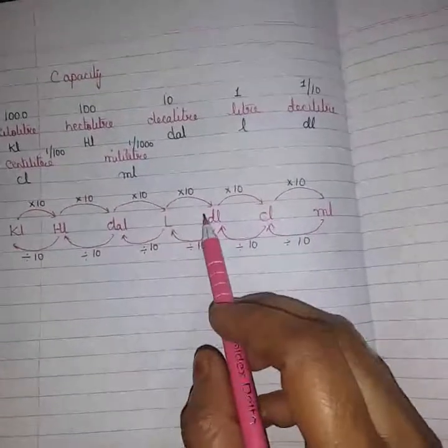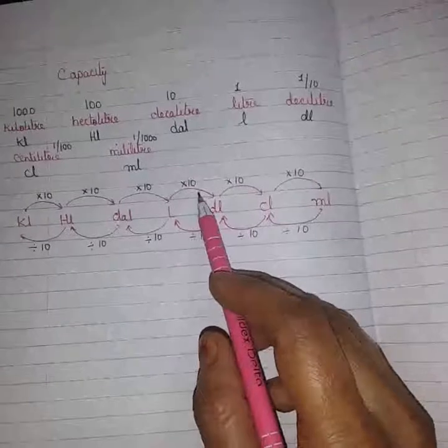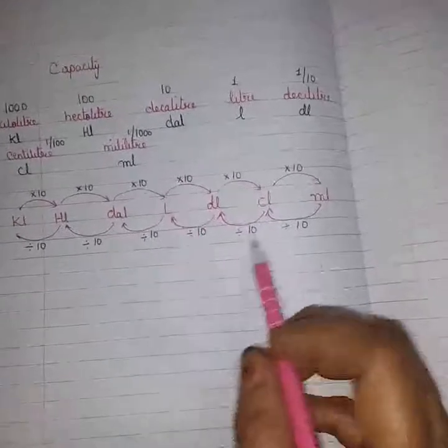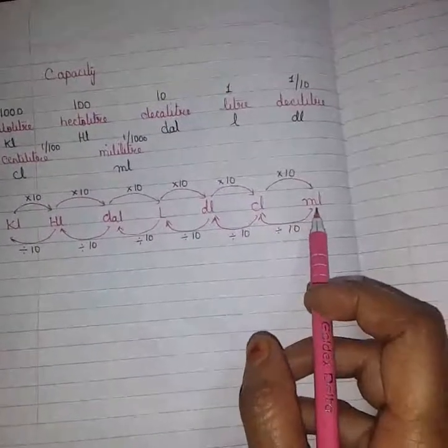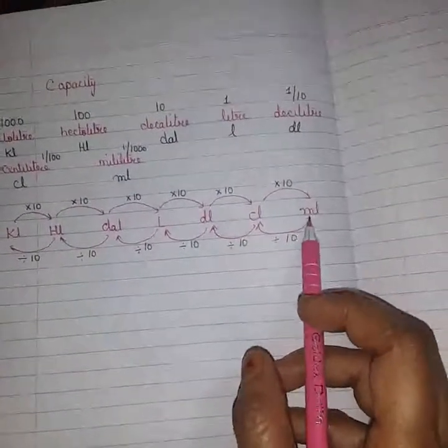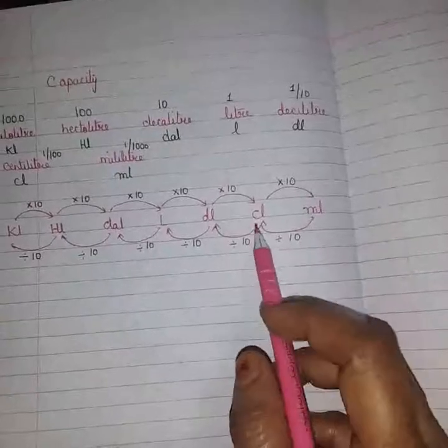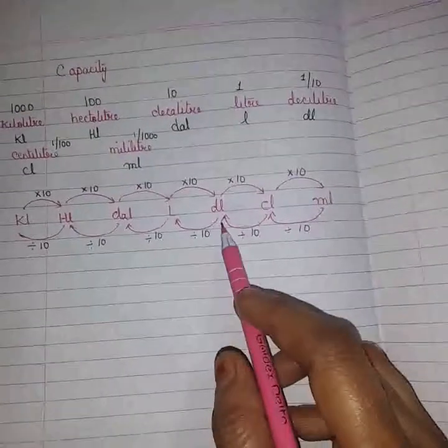In this way, moving one skip at a time, every time multiply by 10. And if we are moving from the right side — right to left — then divide by 10.